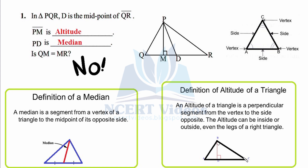For vertex A, the opposite side is BC; for vertex B, the opposite side is AC; for vertex C, AB is the opposite side. An important distinction: a median will always lie inside a triangle, whereas an altitude can lie inside or outside, depending on the triangle type.